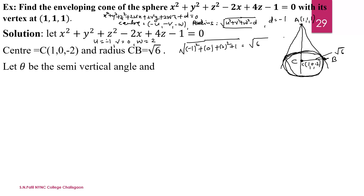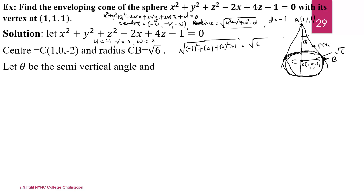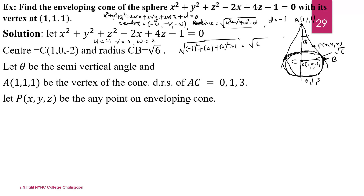Let theta be the semi-vertical angle. We take P as any point (x, y, z). The vertex is (1, 1, 1) and the center is (1, 0, −2). The DRS of the axis AC are: (1−1, 0−1, −2−1) = (0, 1, 3). For the DRS of the generator AP, we take P as any point, giving (x−1, y−1, z−1). Now theta is remaining.